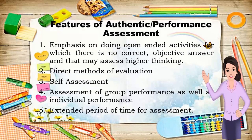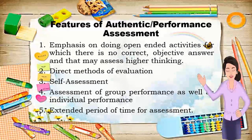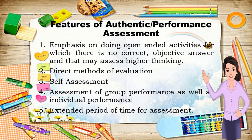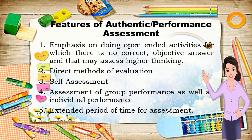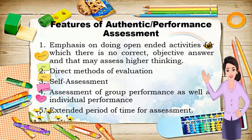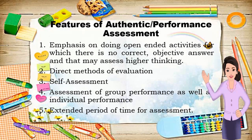Let us proceed to the features of authentic or performance assessment. Number one is emphasis on doing open-ended activities for which there is no correct objective answer, which may assess higher-order thinking. In many performance assessments, there is no single correct answer — for example, when a student creates a painting, designs a science project, delivers a speech like Martin Luther King's 'I Have a Dream,' writes a research report, or presents and defends work before a panel. Students have the choice to construct their own responses, which poses greater challenges for scoring but gives opportunities to develop higher thinking skills.